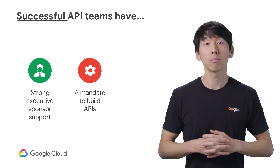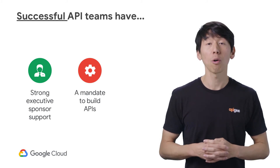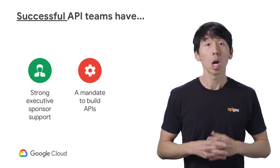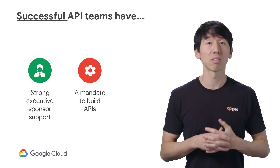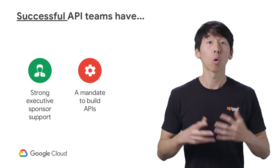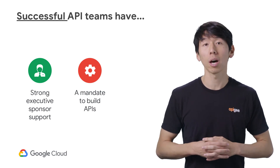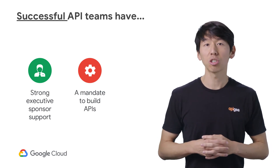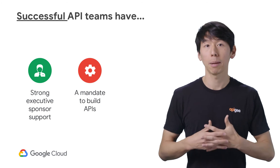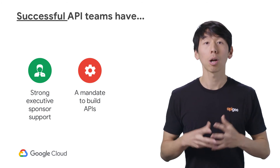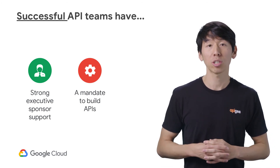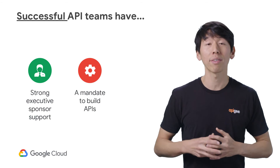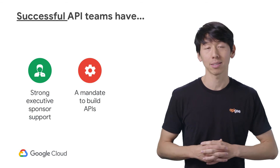Second, the API team should be solely focused on APIs. We often see API teams consist of developers who are also shared with other projects. This not only can lead to issues with resourcing and bandwidth, but also affect the direction of your APIs, such as cutting corners and striving away from best practices.